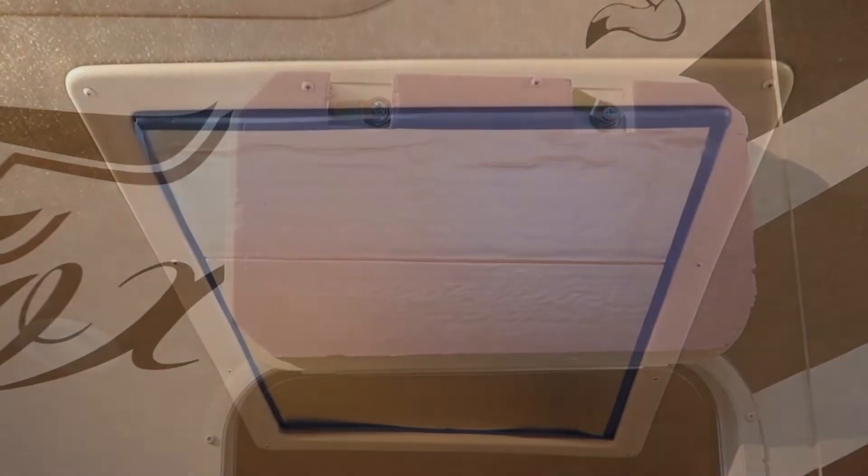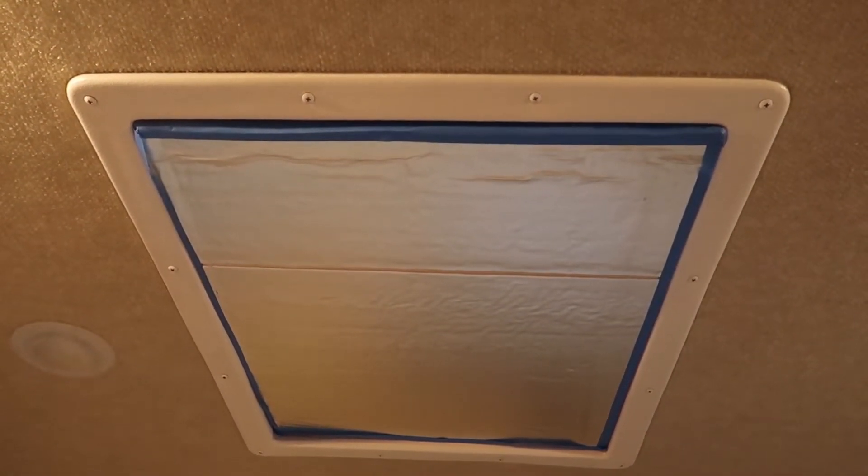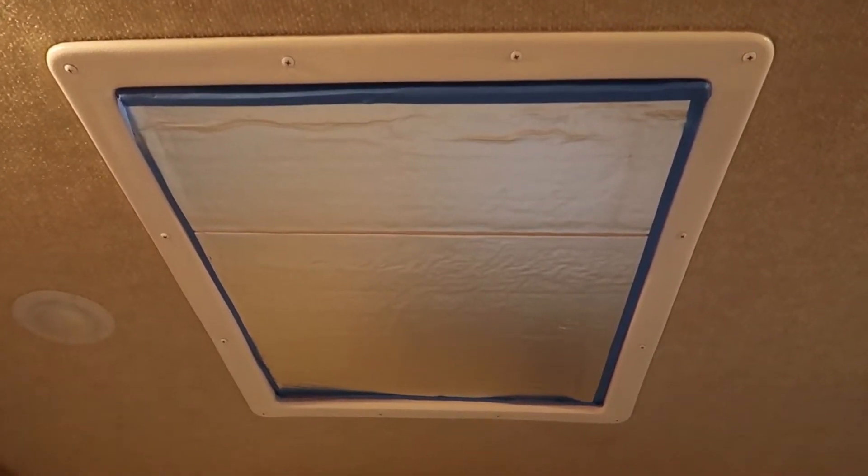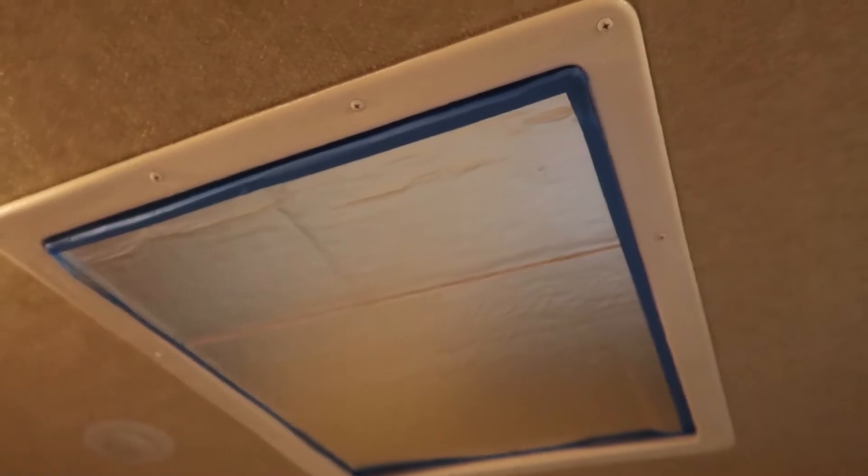Here's one of my skylights. What I have done is taken a sheet of foam board that has foil on both sides, and then I cut that to slip into the skylight. I put some blue painter's tape around the edges of it to keep the foam from coming apart.